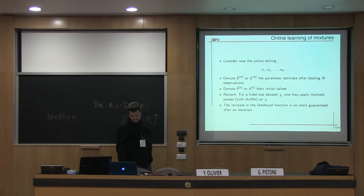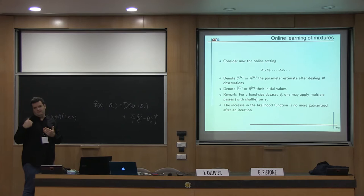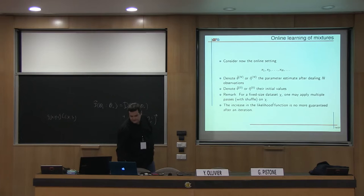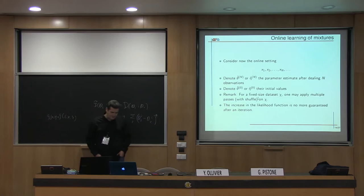Now I switch to the online setting. I will denote theta_n or eta at n as the parameter estimate after doing n observations. Just a remark: if we have a fixed-size dataset, we're able to apply the online method just by multiple scans of this dataset with shuffle. One important thing, of course: classical properties of algorithms like EM are no more guaranteed in online settings. For example, the likelihood function is no more guaranteed to increase after each update.